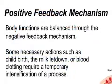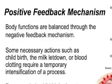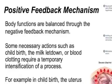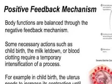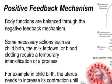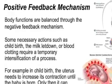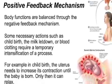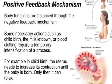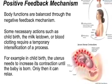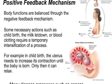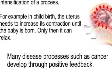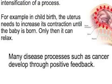Body functions are balanced through this negative feedback mechanism. We also have an opposite mechanism known as the positive feedback mechanism. Some necessary actions in our body, such as childbirth, require temporary intensification — the uterus contracts more and more until the baby is pushed out, and then it stops. Blood clotting and milk letdown during breastfeeding are similar examples. However, many disease processes, such as cancer, also develop through positive feedback — they grow stronger as they increase in size.